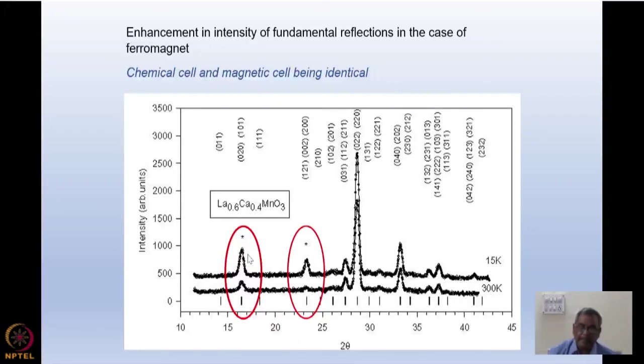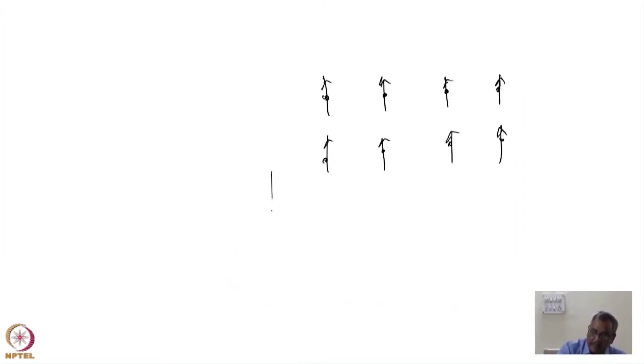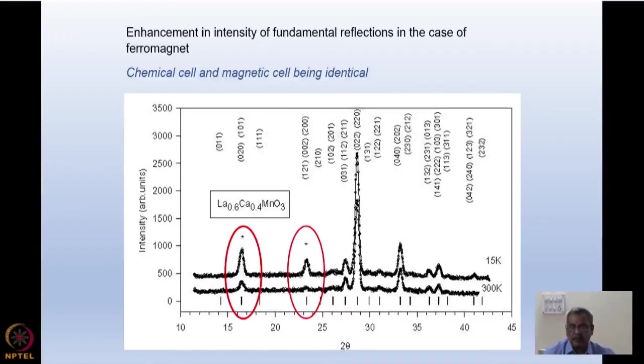Reason being, for a magnetic material, if you consider the moment versus temperature, it undergoes a second order phase transition. That means as you go to lower and lower temperature, the moment increases with lower temperature and that's what is indicative of the pattern here taken at 15K and 300K.